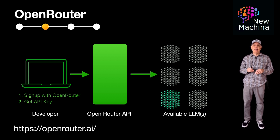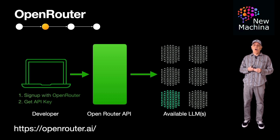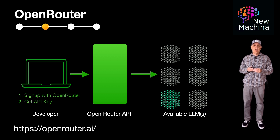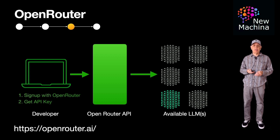Open Router offers SDKs for Python and Node.js, but you can also integrate with Open Router using other languages via Open Router's documented REST API endpoints. Open Router also provides options to fine-tune prompts and adjust settings such as temperature, top P, top K, etc.